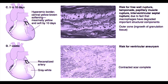At five to ten days following MI, at the affected area of the heart, you can see a hyperemic border with a central yellow or brown softening, which is maximally yellow and soft by approximately ten days. This is a very important time for the patient, as during this period there is a very high risk for free wall rupture of the affected area and resultant cardiac tamponade. There is also a large risk for papillary muscle rupture with valvular insufficiency. Patients with a septal infarct may also develop an interventricular septal rupture. This weakness is due to the fact that macrophages have degraded the important structural components of the ventricular wall.